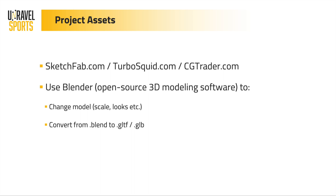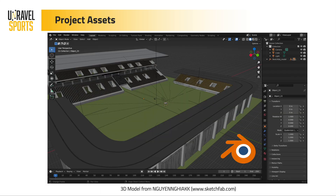You can download these models and use Blender — which is generally used for VFX and 3D modeling — and we're only using it here to scale the model or change how it looks. Most importantly, we use it to export from a .blend or some other 3D file to GLTF or GLB, which I think is the only 3D model file type that Bevy currently supports. If you load it into Blender, this is what it looks like. I didn't really do much other than load it and export it back to the correct file type.